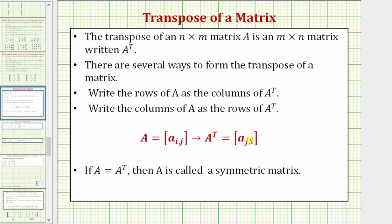We'll often see this notation where matrix A has elements A sub i comma j, and A transpose would have elements A sub j comma i. Notice how the rows and columns are interchanged. And if matrix A equals A transpose, which would only possibly occur when A is a square matrix, then A is called a symmetric matrix.